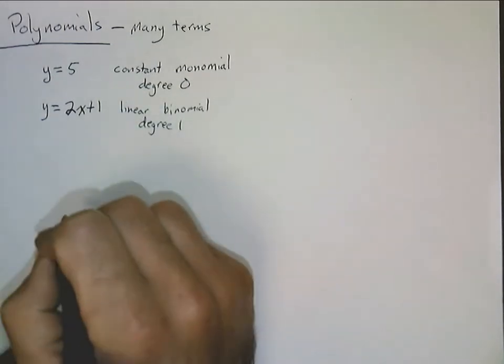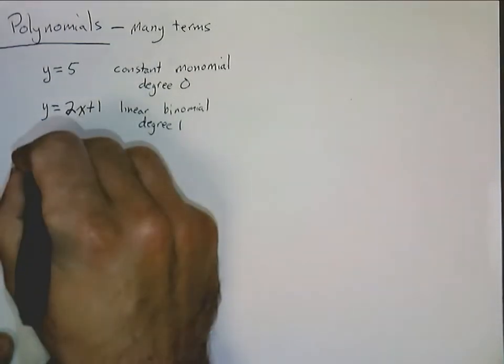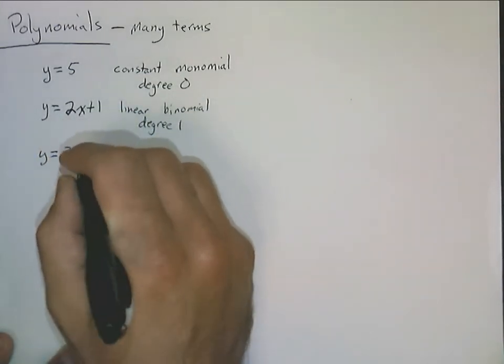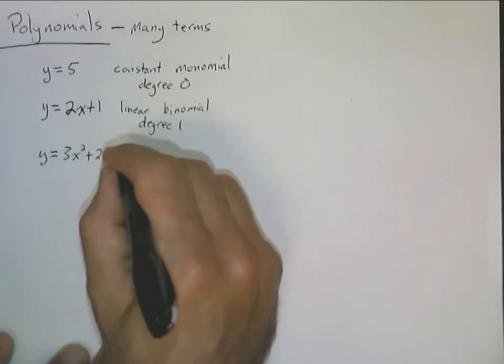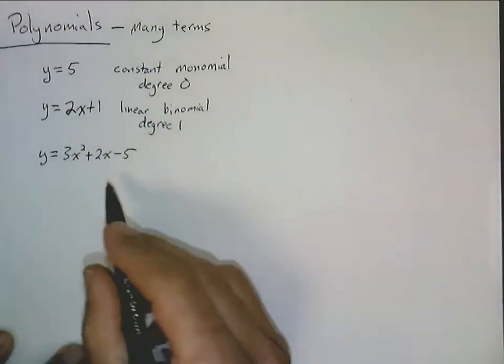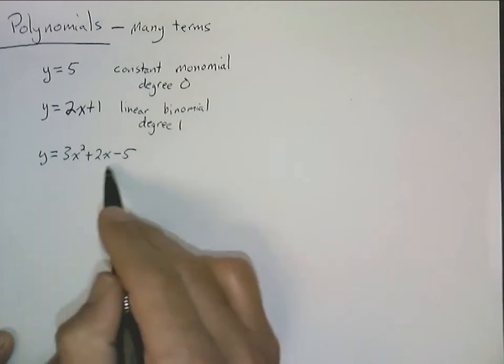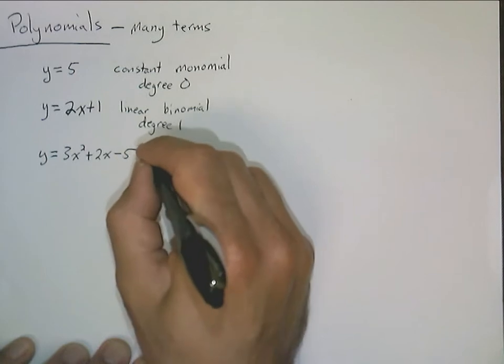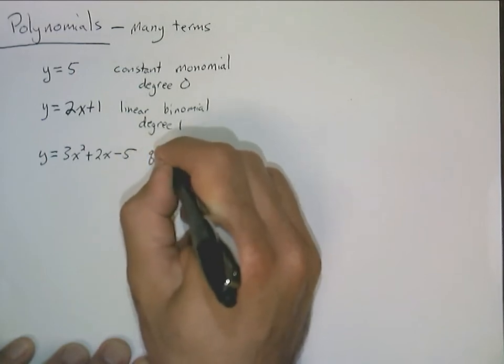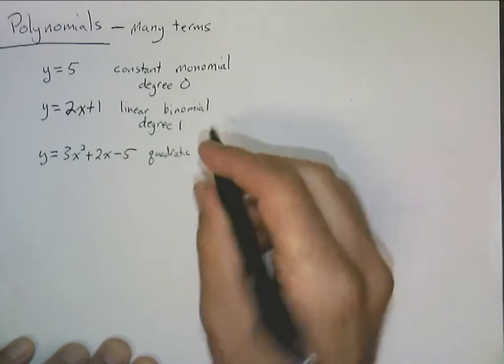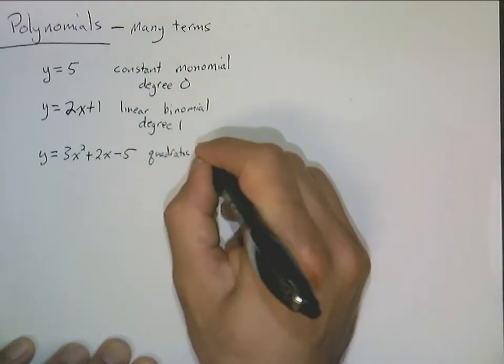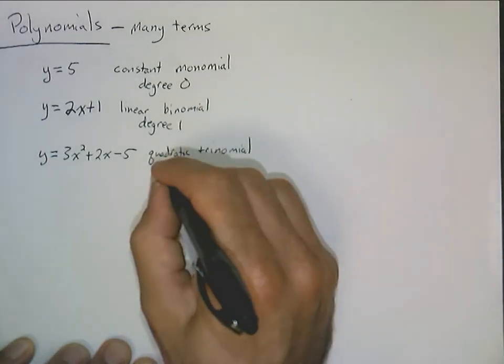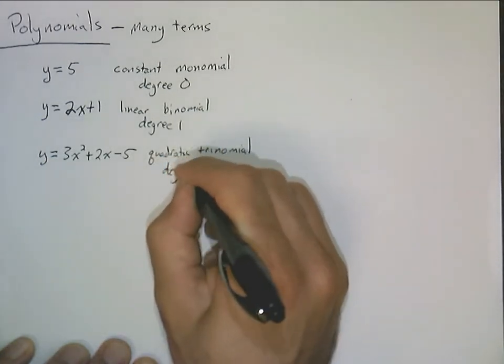Moving up one more degree, we have things like this. Y is equal to say, 3x squared plus 2x minus 5. Why not? And we all know what these things are called. If we have a squaring in it, we call these things quadratic. So this would be a quadratic and three terms. So it's a trinomial. Quadratic means degree two.